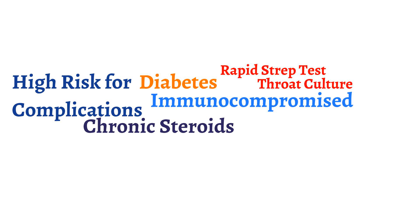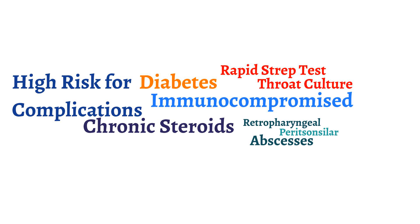It is important to help identify severe forms of group A strep pharyngitis as complications can result. The complications of group A strep include peritonsillar or retropharyngeal abscesses. The purpose of treating group A strep pharyngitis is to help reduce symptoms, complications such as abscesses, transmission to close contacts, and the risk of acute rheumatic fever.